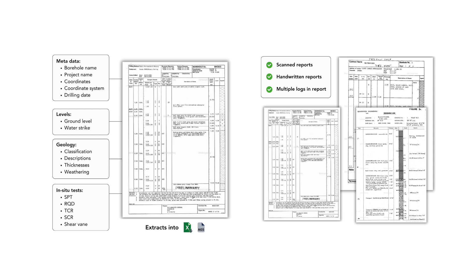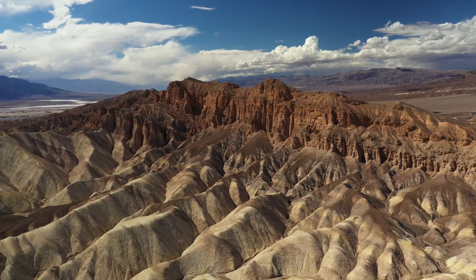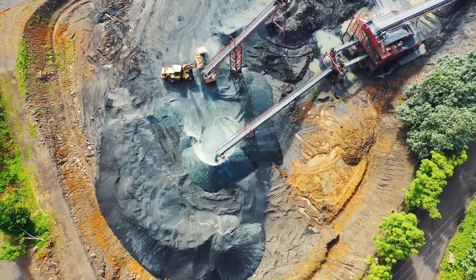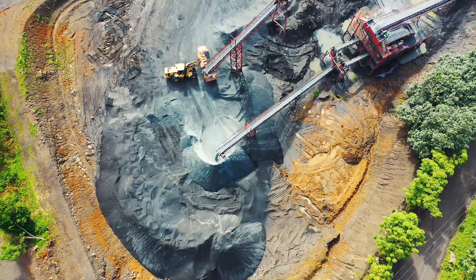In today's episode, I also want to give you three ways in which you can start using AI in geotechnical engineering and the geosciences. These are: structuring data by reading borehole logs and historic information into Excel and AGS files; AI for geological modeling; and analyzing monitoring data using data analytics. These are three use cases you can start using AI with today.